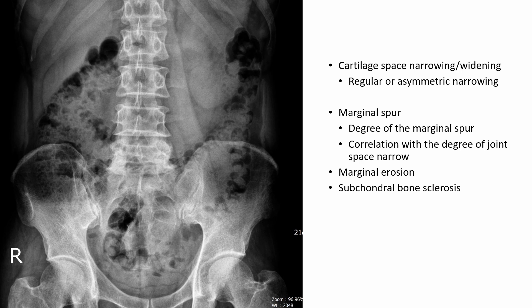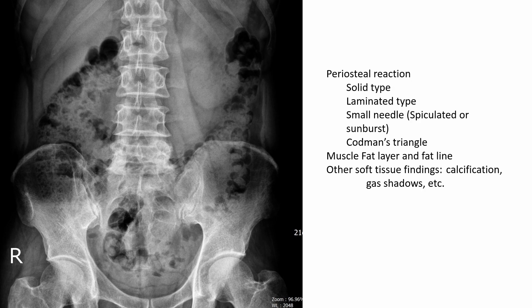Upon assessing the cartilage space, attention was given to potential lumbar disc space narrowing, marginal spur formation of the lumbar spine, sacroiliac joint, and hip joint space. It was evident that the L5-S1 space was narrowing, but the rest appeared typical. Regarding the soft tissue, shadows from the outer border of the psoas muscle layer, interfascial layer, and intestinal gas were evaluated. The gas shadow throughout the colon mimics the appearance of multiple radiolucent lesions in the iliac bone.